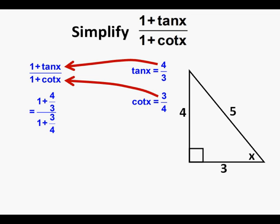Here it is with the substitutions made. We have 1 plus 4-thirds in the numerator and 1 plus 3-fourths in the denominator. To create a common denominator in the numerator, we rewrite 1 as 3 over 3. To create a common denominator in the denominator, we rewrite 1 as 4 over 4.